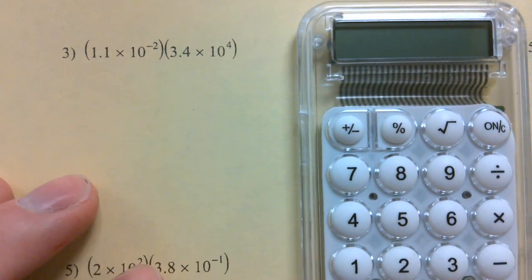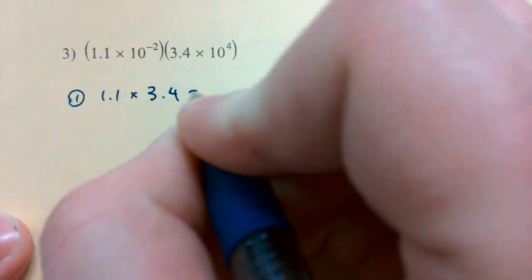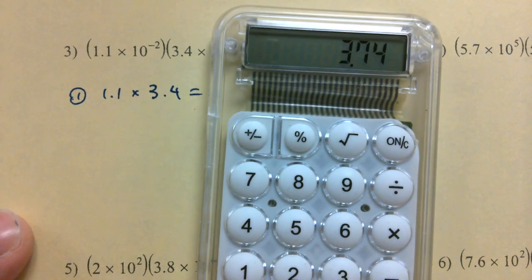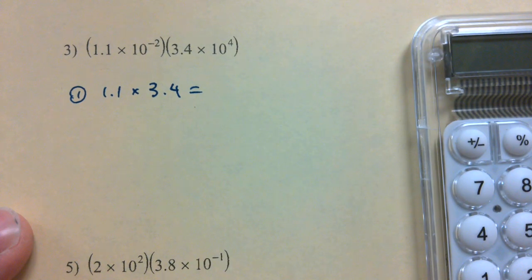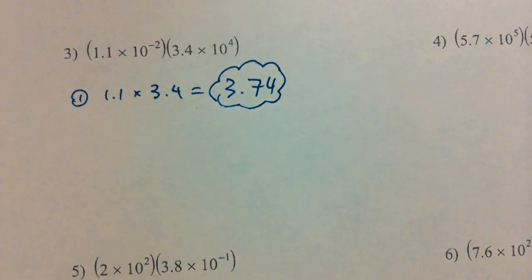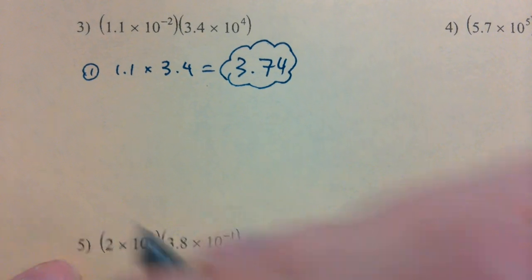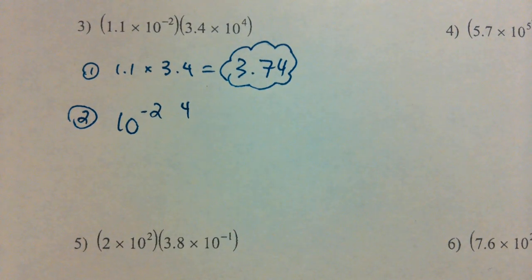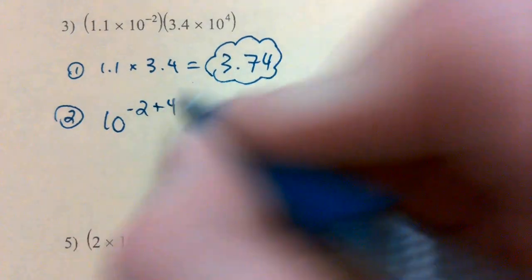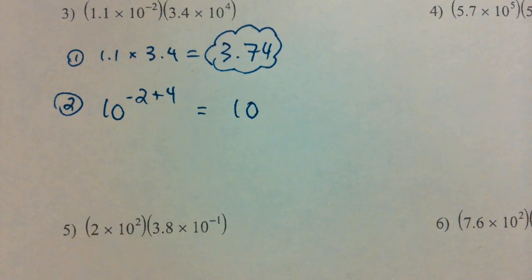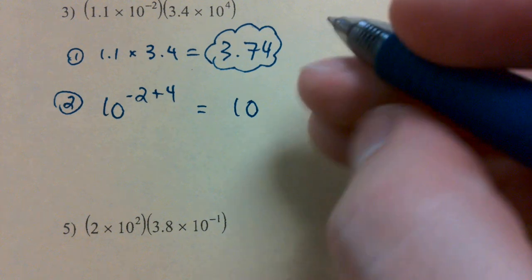So, we take our front two numbers, 1.1 and 3.4, and we multiply them. What do we get? 1.1 times 3.4, 3.74. That's my new leading number. What am I going to do with my powers of 10 now? Multiply them, very close. We've got to add them together. So, what am I going to get here? 10 to the 6th, negative 2 plus 4.